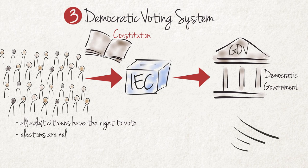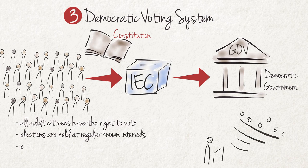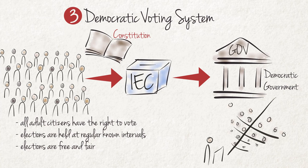2. Elections are held at regular, known intervals. 3. Elections are free and fair. 4. And finally, we apply majority rule, which means that the political party or party coalition with the most votes gets to govern.